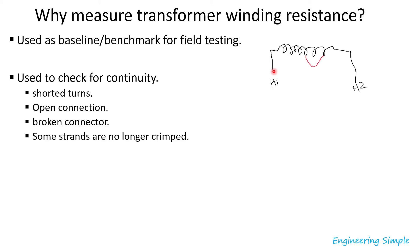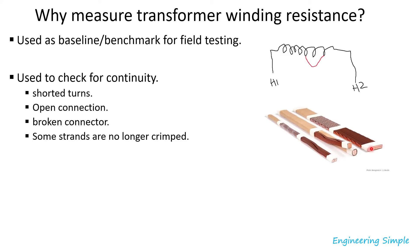A winding lead is connected to a cable via a connector, and if that connector breaks you lose continuity — winding resistance should catch that. Also, large power transformers often use stranded cables to control eddy currents. Each strand is an individual conductor, and if some strands come loose or break, it will impact the measured resistance to some extent.